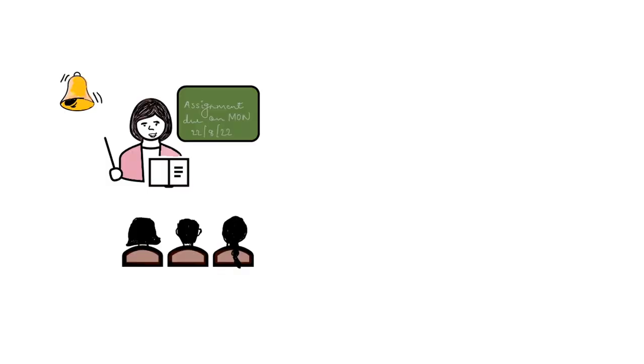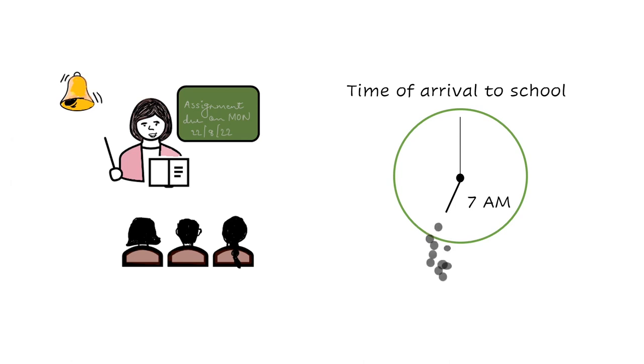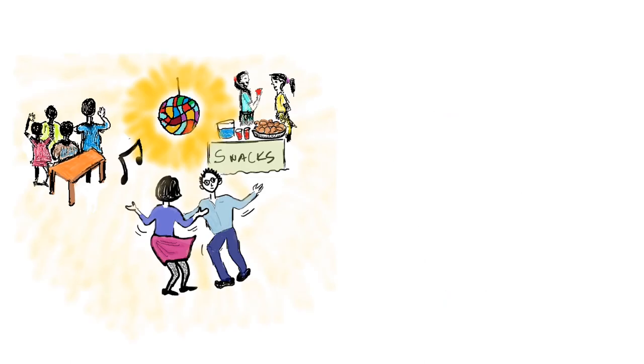Yet another criterion of a reliable time cue is its ability to bring about phase synchrony. For example, being at school at 7 AM is a strong cue and almost every student makes it on time every day. However, if there was a party due to start at 7 PM, there is no great incentive to be on time for this party, other than good manners of course.